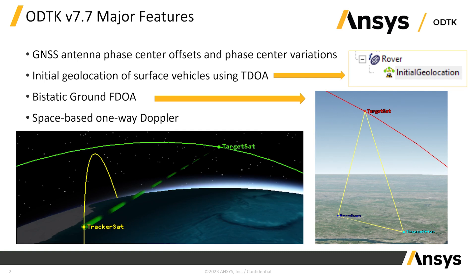We also added a new measurement type called bistatic ground FDOA. This is complementary to the bistatic ground TDOA that was previously added to the product. The FDOA adds range rate information in addition to the range difference information from TDOA. The bistatic geometry is shown on the right — we have a transmitter, like a radio station, and a receiver that has both direct line of sight to the transmitter and can also see a target satellite, where the signal bounces off the satellite back down to the receiver.